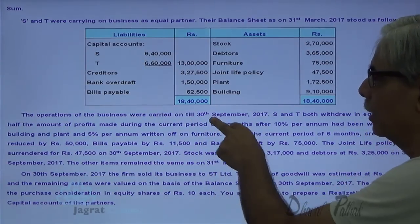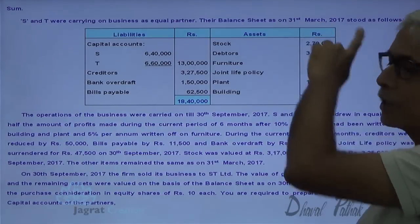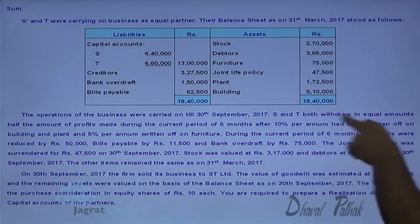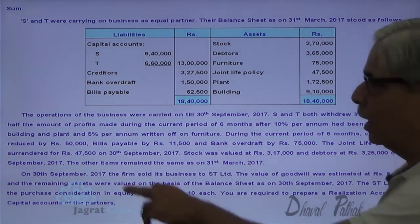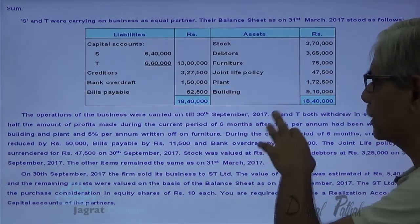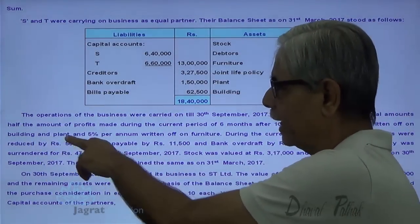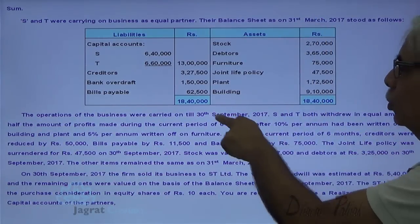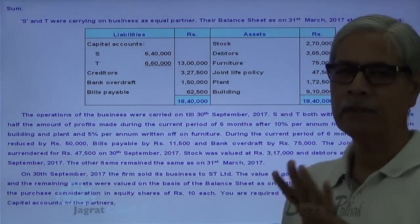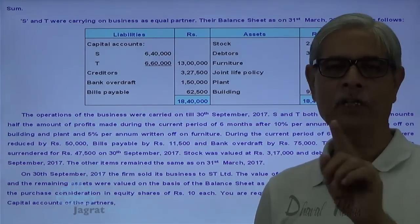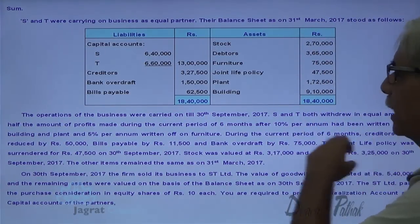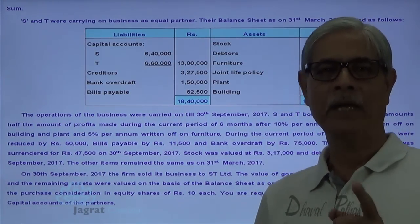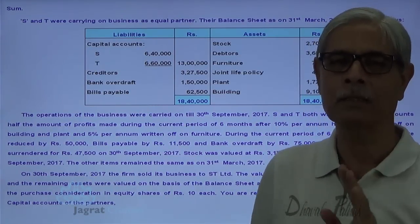The operations of the business were carried on till 30th September 2017, i.e., from 1st April to 30th September — a period of 6 months. S and T both drew equal amounts. Half the amount of profit made during this current period of 6 months — after 10% per annum depreciation on building and plant, and 5% per annum on furniture — was withdrawn by the partners.